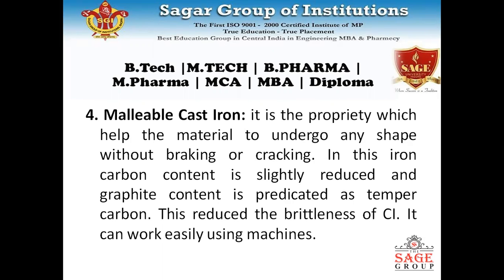Malleable cast iron can generate brittleness under iron-carbon conditions; however, through heat treatment the graphite content is converted into tempered carbon, which reduces brittleness. The material can then be easily machined.